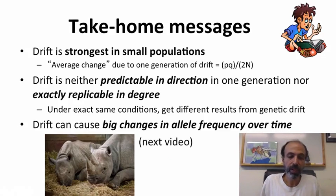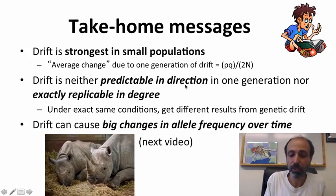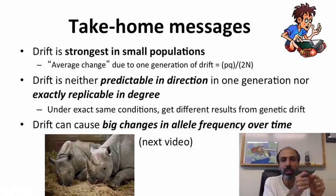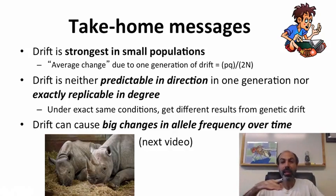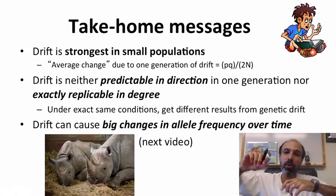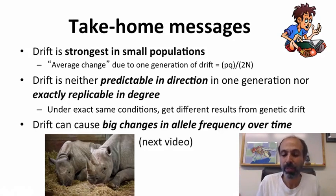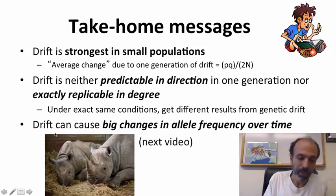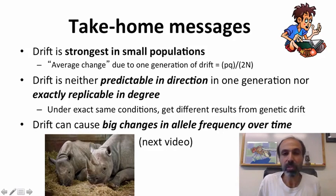So here are the take-home messages from this video. Drift is strongest in small populations. Drift is neither predictable in direction nor exactly replicable in degree in one generation — all those different populations started the same but didn't follow the exact same track. They all had the same average change in allele frequency on average, but some went up, some went down, some changed more, some less. Finally, drift can cause big changes in allele frequency over time. We'll pick up on this in the next video. Thank you!